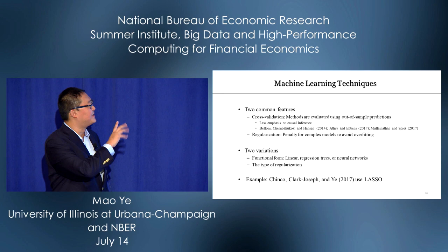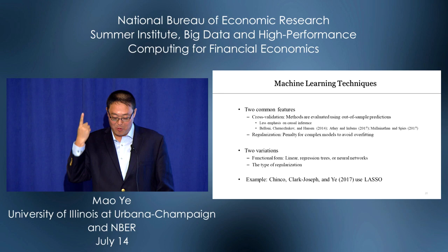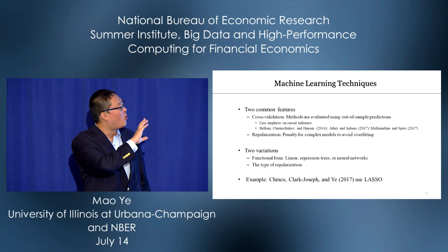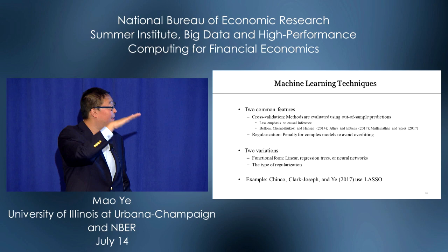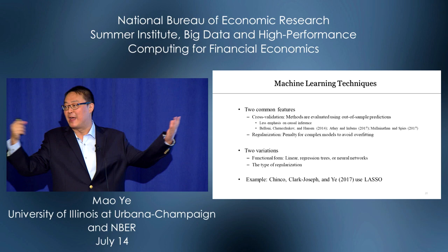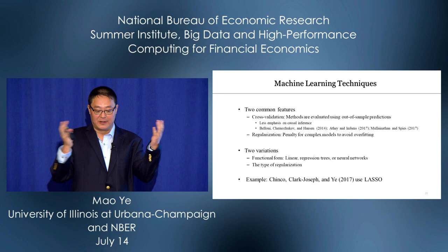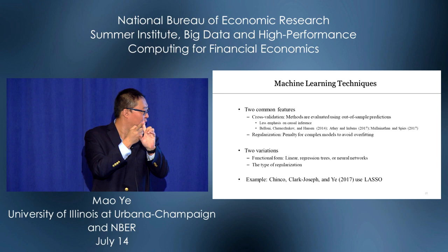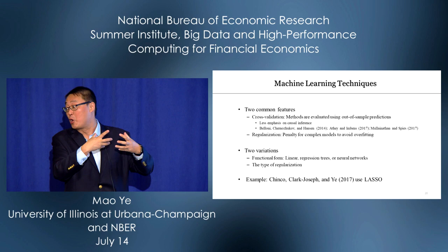Machine learning techniques have two common features. Number one: they focus more on out-of-sample predictions — this is cross-validation, with the goal to maximize out-of-sample predictive performance, with less emphasis on causal inference. Number two: they impose regularization, which is a penalty for complex models. Variations include different functional forms — linear, regression trees, or neural networks — and different types of regularization.